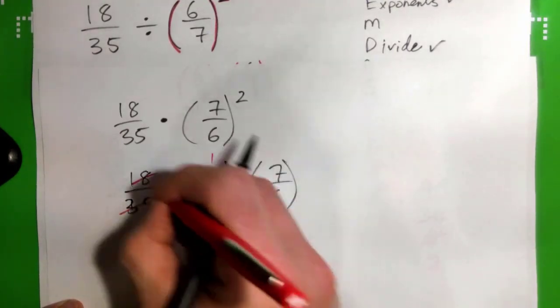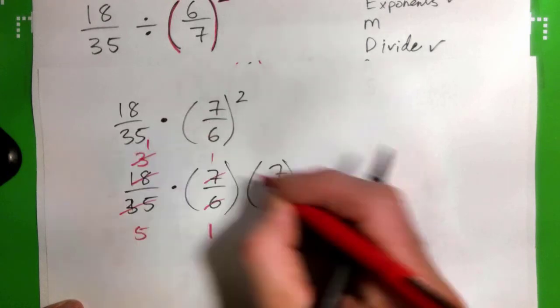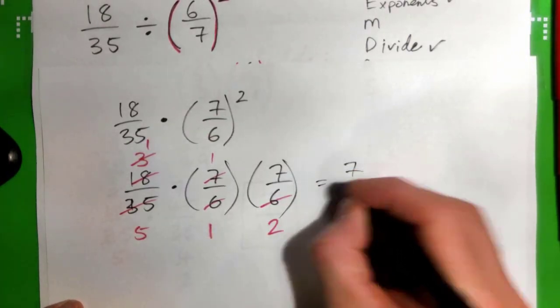Six in that goes three times, one time, two times, and I get seven tenths that way also.